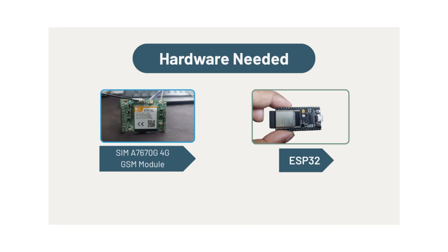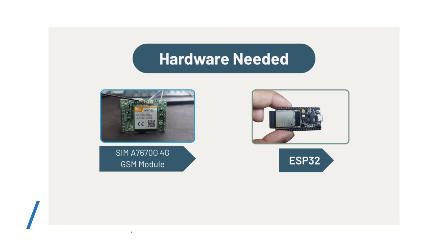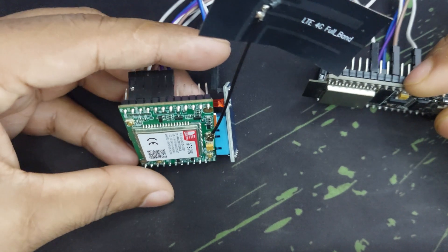For the hardware, we need a SIM A7670G module — this comes at a very cheap price. We also need an ESP32 for programming to upload our program, and we need an AWS account for connecting our devices to AWS IoT Core.